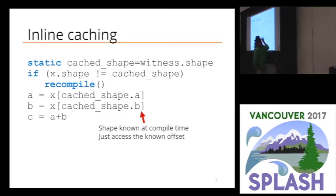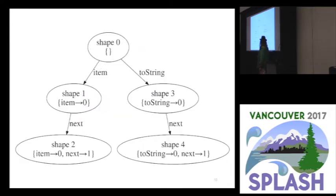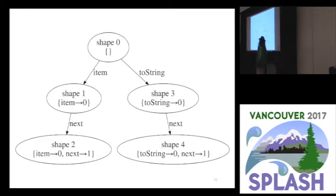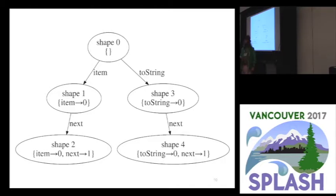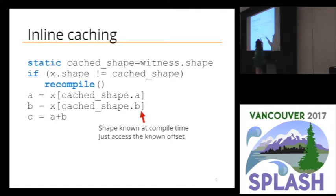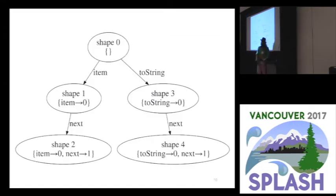This gives us code with a static cache where we keep a shape we've seen before. If we see the same shape again, we just get the offsets we already knew — the shape tells us where everything is in the object, and we're done. If we see a different shape, we recompile. You can always count on knowing the shape because you've compiled the code with a particular shape. This is standard — this is Self, this is Smalltalk, this is certainly every JavaScript virtual machine. To ensure everything has the same shape, you keep all shapes in a tree.